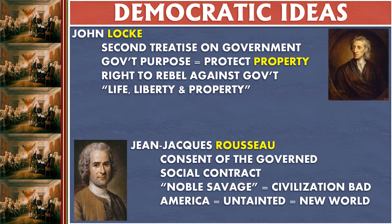Another important thinker was from France named Jean-Jacques Rousseau. He emphasized the idea of the consent of the governed and gave us the phrase 'social contract,' which means that government comes from a social contract. It's not because God chose someone to be king, and it's not because your father was king. The right to rule comes not from the ruler but from the ruled — the average people basically consent to the government, and if the government is not in their interest, they can remove that consent. And when they remove that consent, the government has no legitimacy.